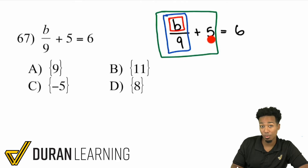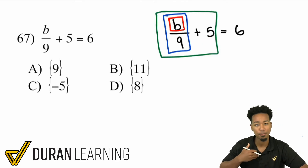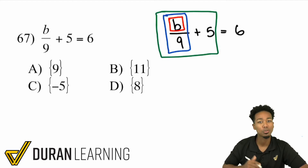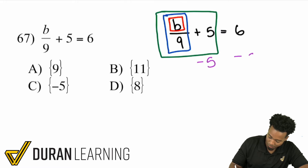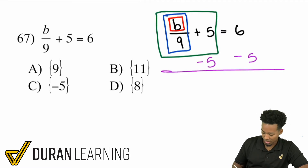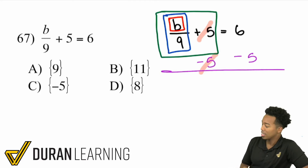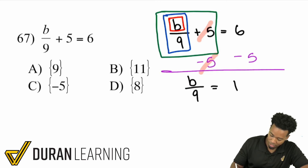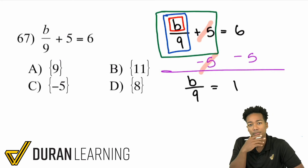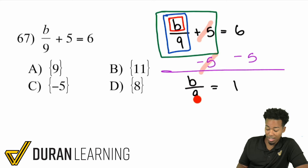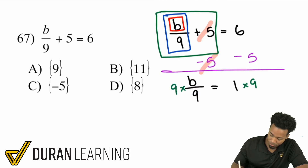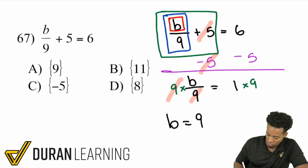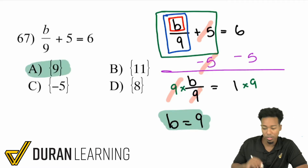So working backwards: dividing B by 9 happens first, then adding 5 happens last. So our first backward step is to get rid of that plus 5 by subtracting 5 on both sides. That cancels the 5, and 6 minus 5 equals 1. So we have B over 9 equals 1. Now we get rid of the division by 9 by multiplying both sides by 9. That cancels out, leaving B equals 1 times 9, which is 9. The answer is A.